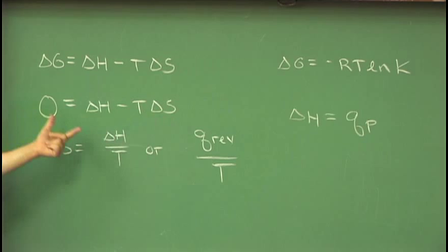Because rearranging, add T delta S to both sides, divide by the temperature, and delta S, the entropy, is equal to delta H over T.